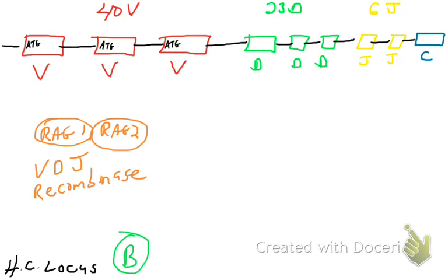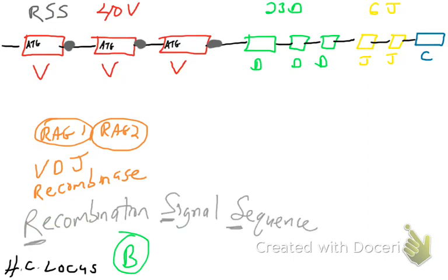So how do the RAG enzymes know where to cut and paste? The answer is that there are DNA sequences right next to these gene segments. These DNA sequences are called recombination signal sequences. They are landing sites for the RAG enzymes.